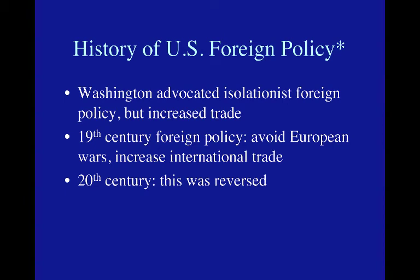Let's talk about the history of foreign policy. Going all the way back to George Washington, in his farewell address he warned us against getting involved in the affairs of other countries and advised us to avoid entangling alliances, while arguing for trade with other nations. We mostly followed that advice through the 19th century, avoiding European wars but increasing international trade. In the 20th century this was reversed — we ignored Washington's advice and became much more involved in the rest of the world. Isolationism probably made more sense in the 1790s than it does today.